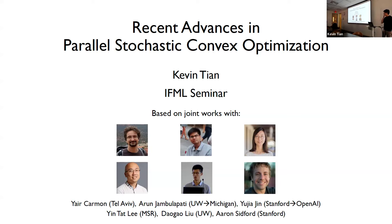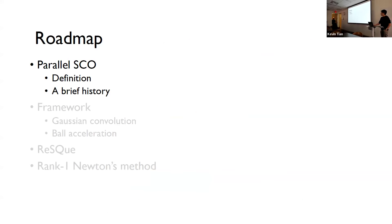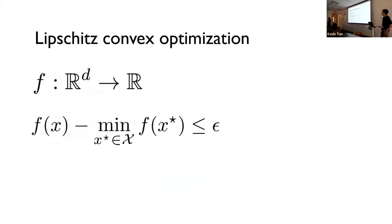Thanks for the kind introduction, Adam. This is going to be about a couple of recent results we had focusing on the topic of parallel stochastic convex optimization. I'll explain what that means shortly. This is based on a number of joint works with a wonderful group of co-authors. Most of us were at Stanford when this line of work first began, so I'll take you through the history of what we'll talk about today.